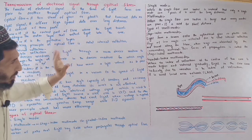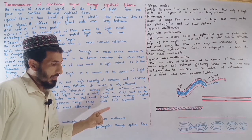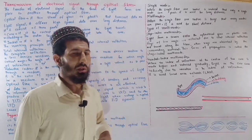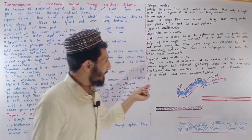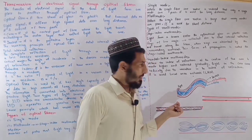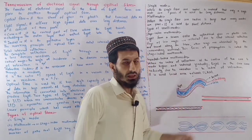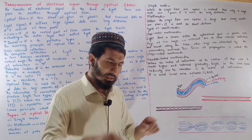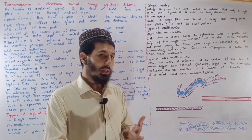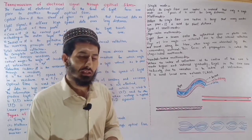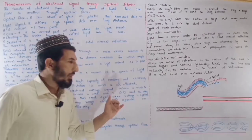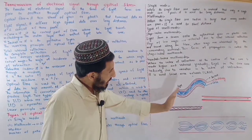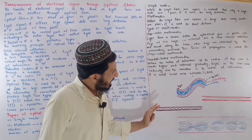Total internal reflection occurs when light travels from a denser medium to a rarer medium. The core is a denser medium and the cladding is a rarer medium. The critical angle is the key angle in this process — it is defined in terms of the denser medium.